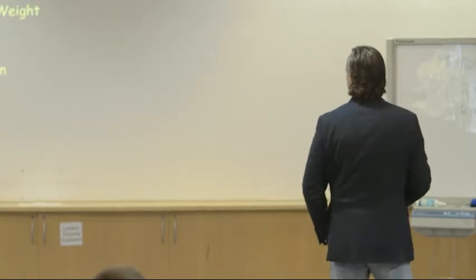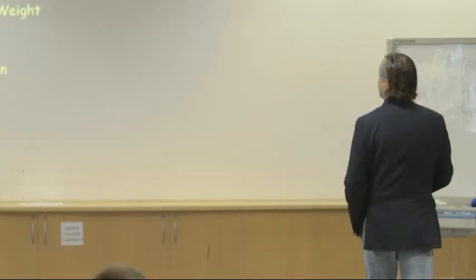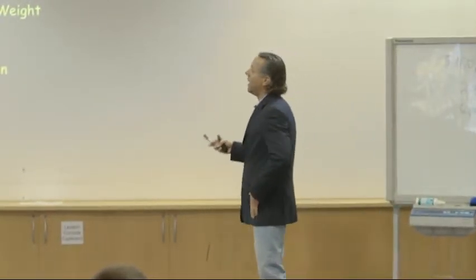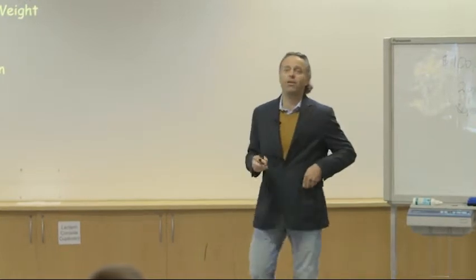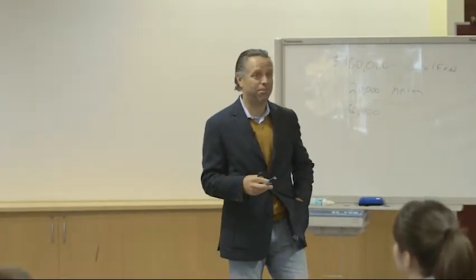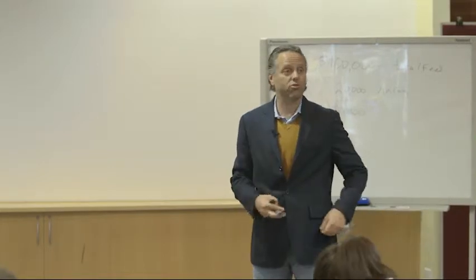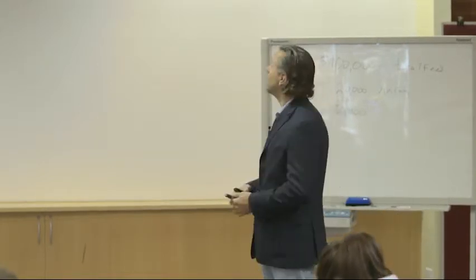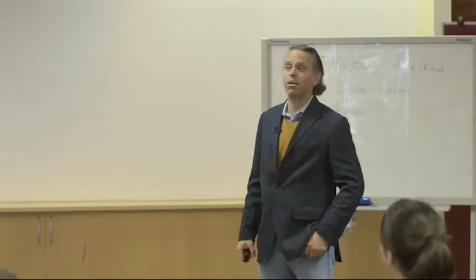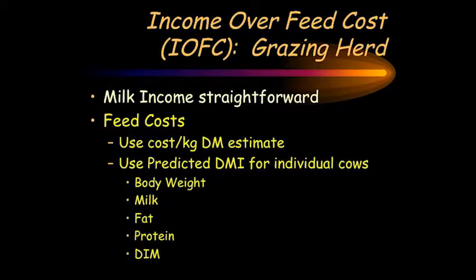On your dairies, if we're going to do this for a grazing herd, I think it's a little more complicated to get your income over feed cost, but this is the best way to do it — the way that the large grazing herd I work with does it. The milk income is pretty straightforward: you know how much milk a cow gave, and we'll use that static milk price.